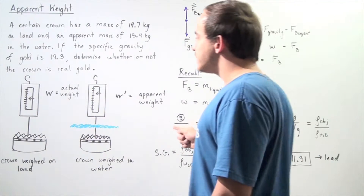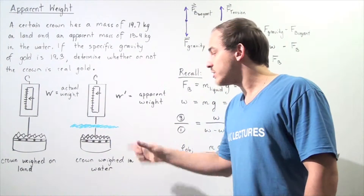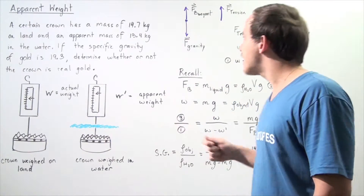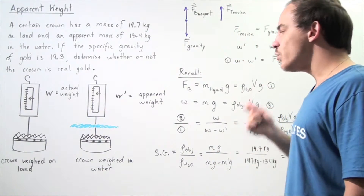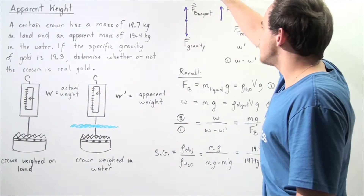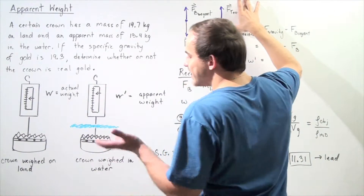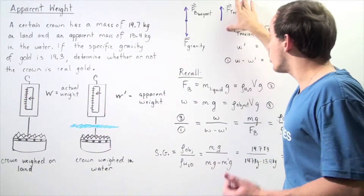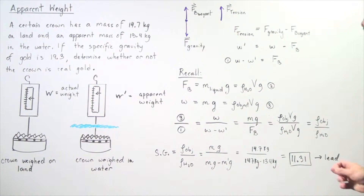In the first step, we examine diagram 2 and look at all forces acting on our crown inside the water. The forces are: the force of gravity pulling downward, the buoyant force from fluid pressure pointing upward, and the tension in the rope connecting the scale and the crown. We have two forces pointing up and one pointing down. Because the crown is in static equilibrium, the sum of all forces along the y-axis must be zero. Therefore, force tension equals force of gravity minus the buoyant force.